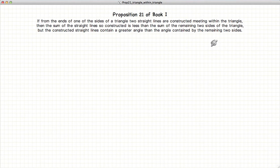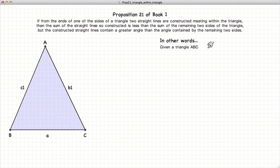This video presentation is on Proposition 21 of Book 1, which states that if we have a given triangle, in our case we'll call it ABC, we have another point within the triangle ABC.